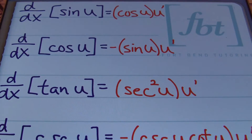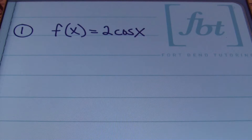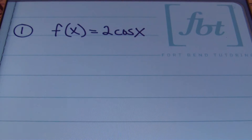Go ahead and jot those down — you can press the pause button to capture all of that. Now we're going to dive into our first problem. In problem one we have f of x equals 2 cosine x, and we're going to find the first derivative of this function.